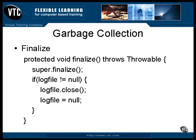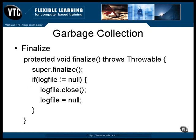Here's an example. The method is declared as protected and it's declared as possibly throwing an exception — both of these items are explained later. A call is made to the super class finalize(). In this example, the file named log file is closed if it has been left open, but don't count on this happening. If your program ends, the Java virtual machine may just shut down without ever calling finalize().